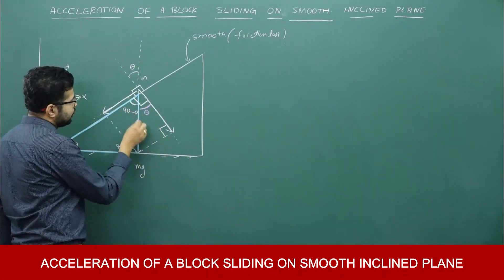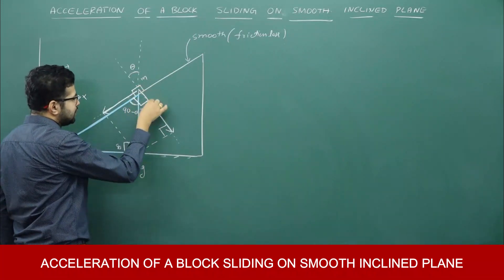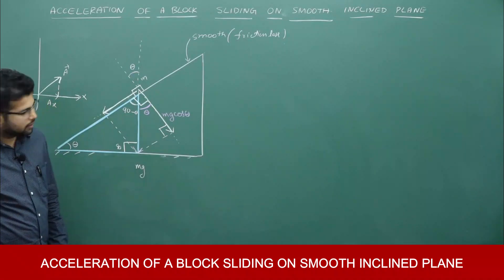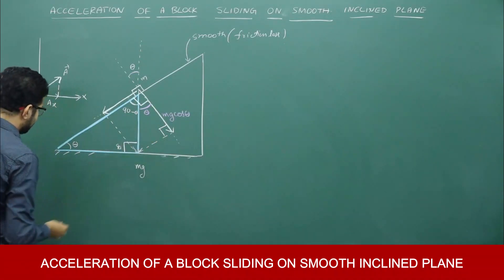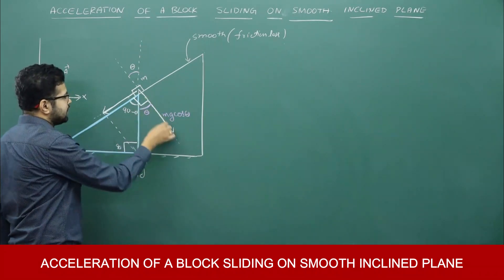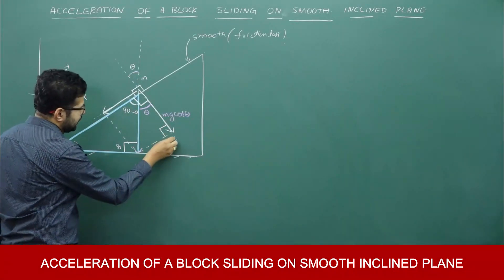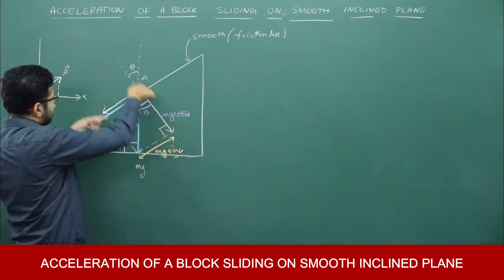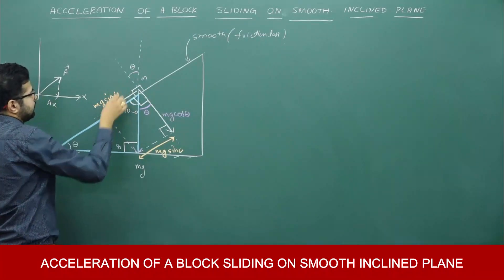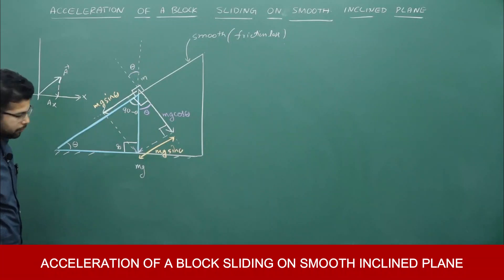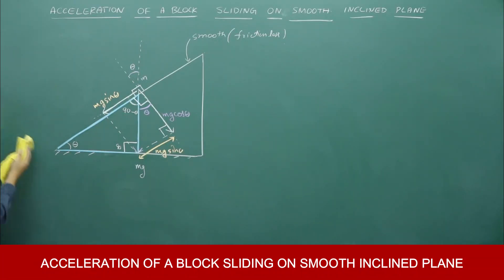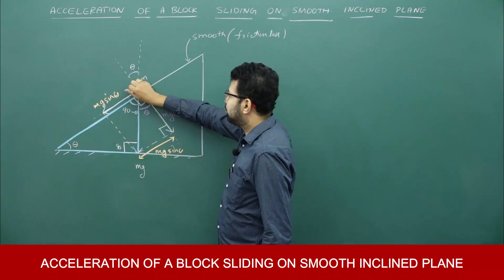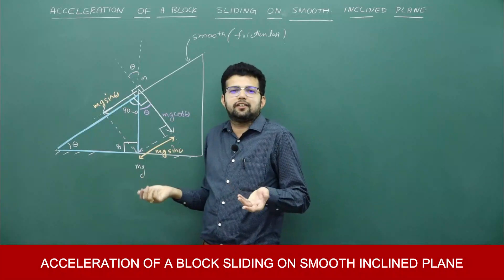If this angle is theta and this is 90 degrees, then the hypotenuse is mg. For angle theta, the adjacent side is mg cos theta — because adjacent side equals hypotenuse times cos theta. The opposite side is mg sin theta. So the component of mg perpendicular to the inclined plane is mg cos theta, and the component along the inclined plane is mg sin theta. Now, mg cos theta tries to pull the block into the surface, but the block doesn't move in that direction, so mg cos theta is effectively balanced by the normal reaction.